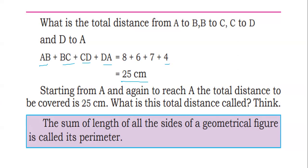Starting from A and again reaching A, the total distance covered is 25 cm. This total distance is called the perimeter. The sum of the lengths of all the sides of a geometrical figure is called its perimeter.